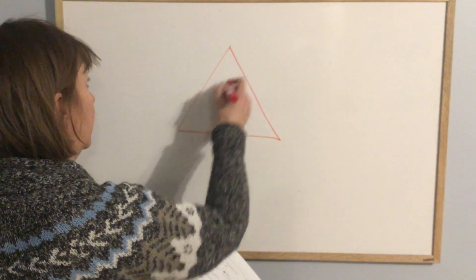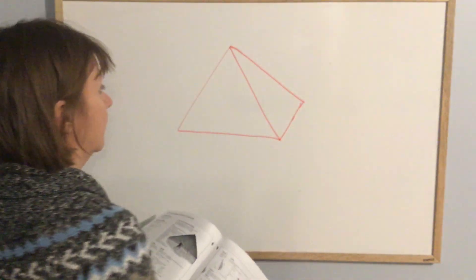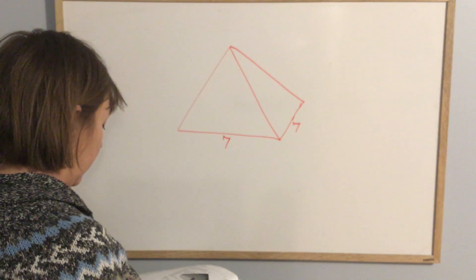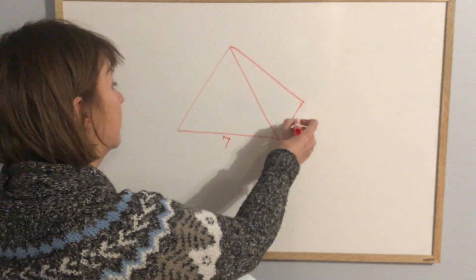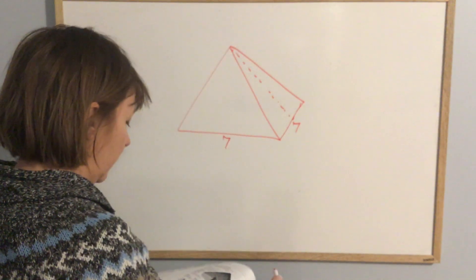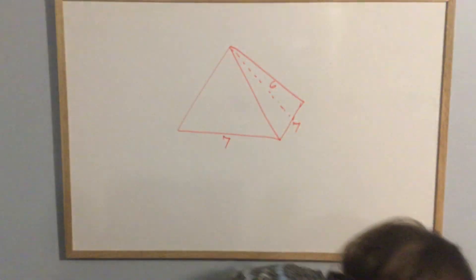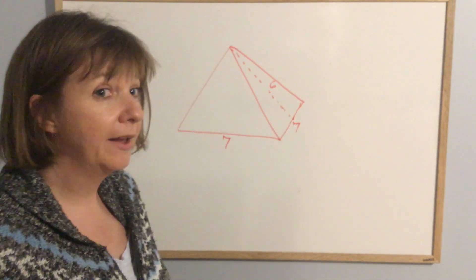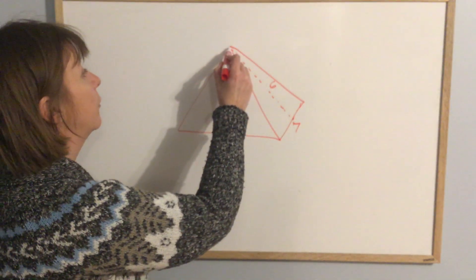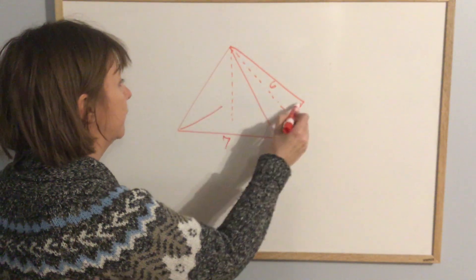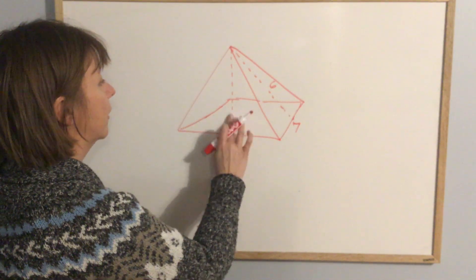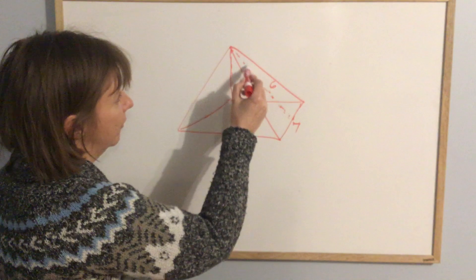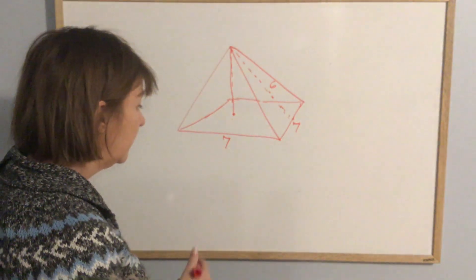In example one on page 272, they give you a pyramid. One side is seven, the other side is seven, and going up the side wall of the triangle is six. That is called the slant height, because it's the height of the slanted side of the pyramid — not the height of the pyramid overall. The overall height would be from the peak straight down to the middle of the floor.